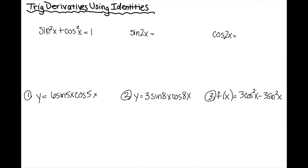If I divide the whole thing by sine squared x first: sine squared x divided by sine squared x is one; cosine squared x divided by sine squared x is cotangent squared x; and one divided by sine squared x is cosecant squared x.